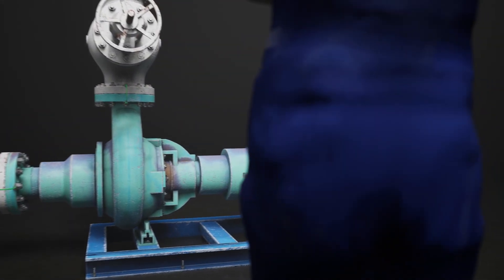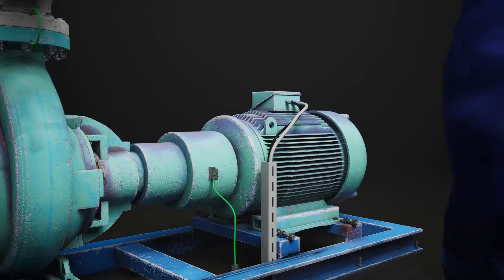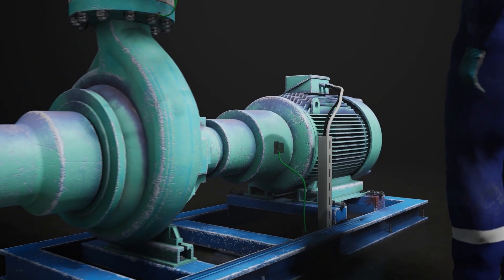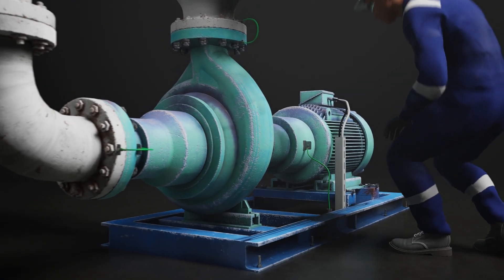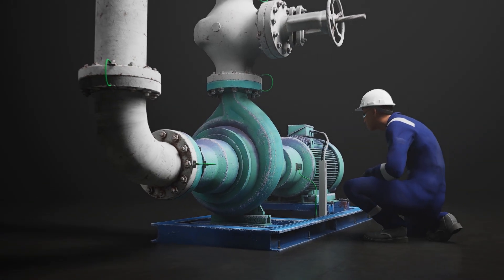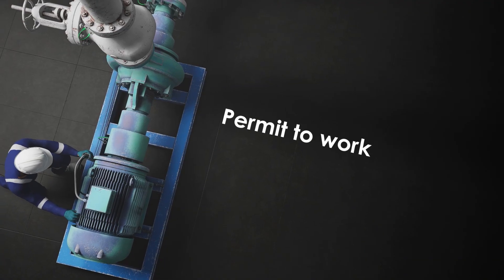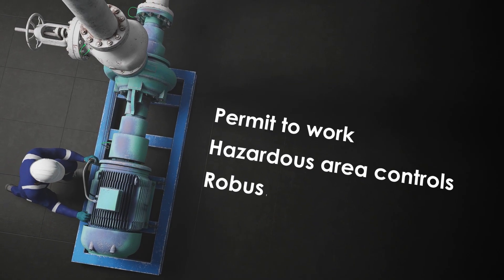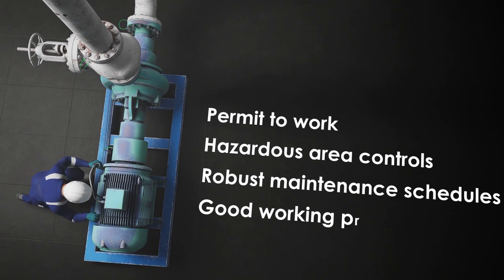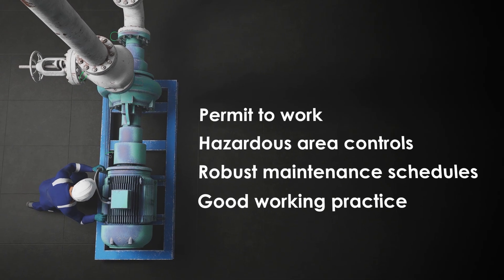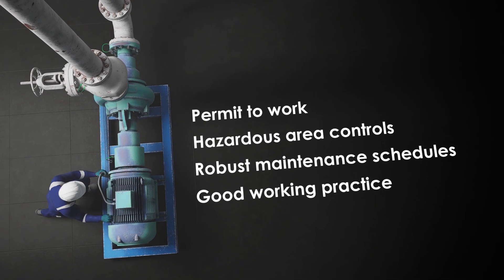The third consideration is the maintenance of plant and equipment. For instance, interrupting a conductive path to earth could take a safe operation to something extremely hazardous. Permit-to-work, hazardous area controls, robust maintenance schedules, and good working practice are all vital factors in ensuring such occurrences are avoided.